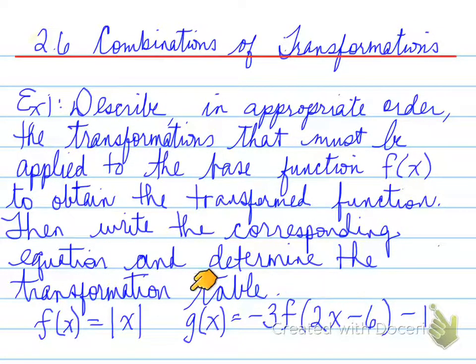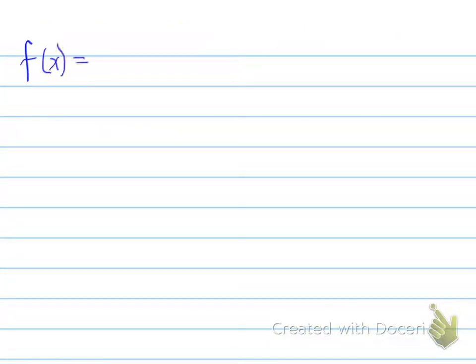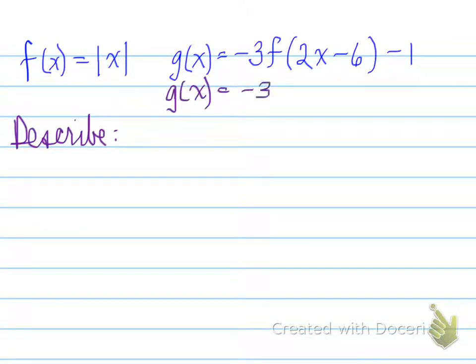What does this have to do with this? Well, all this is saying is we have to apply this transformation. To be able to do that, we have to make sure that x has a coefficient of one. So for the next part we have the function as such, and we have to make x have a coefficient of one. That means that g(x) will equal negative three f(2 times (x minus 3)) minus one.